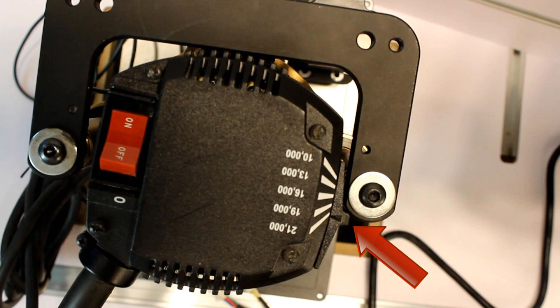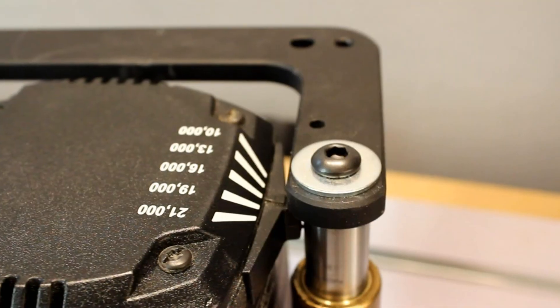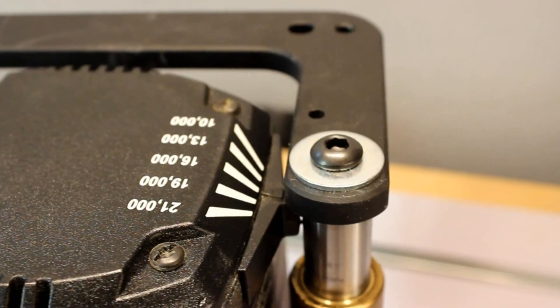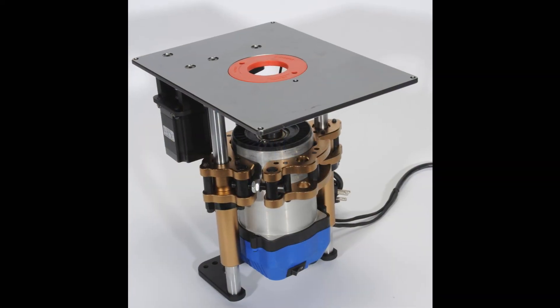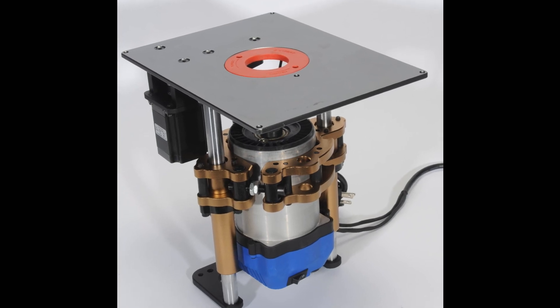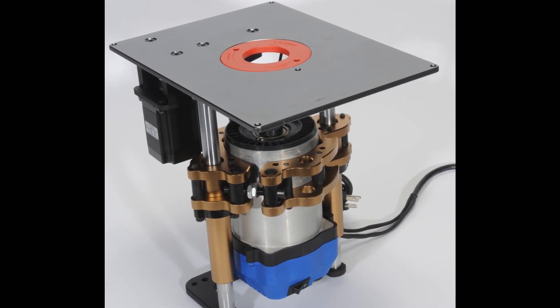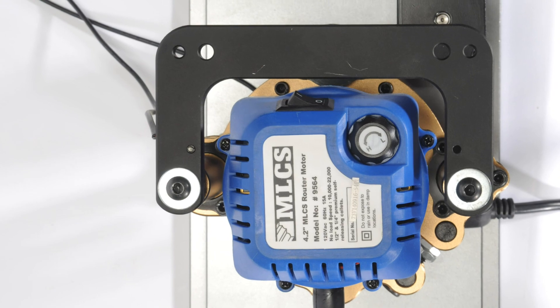For this Porter Cable router I needed to have the switch in a certain position to clear the bottom of the lift. But after I cleared it I could use the switch in any position. MLCS sells a powerful three and a quarter horsepower router motor that fits perfectly in the lift without any obstructions.